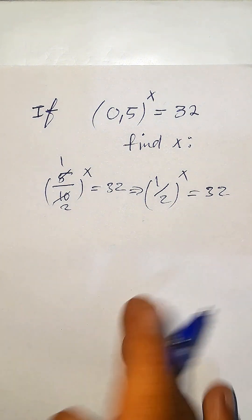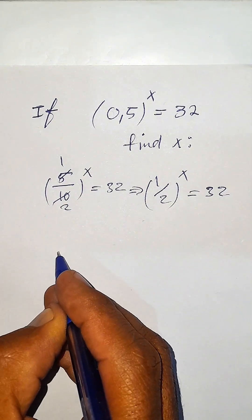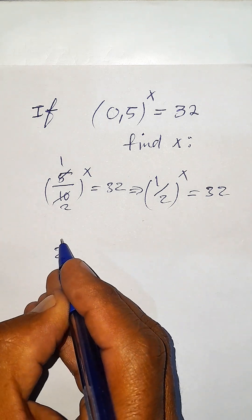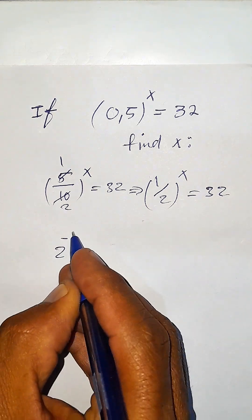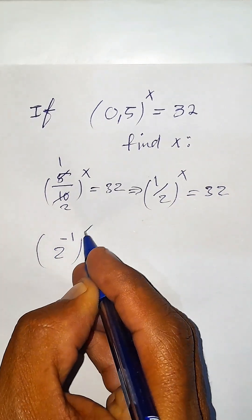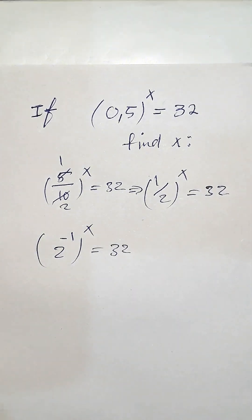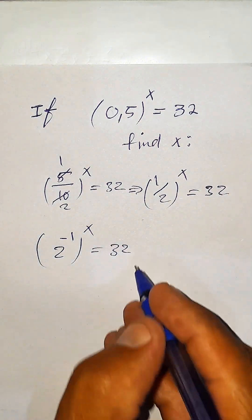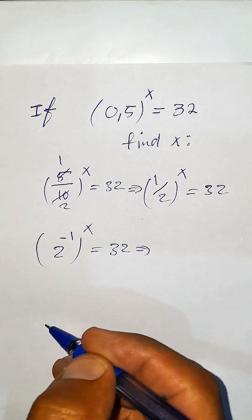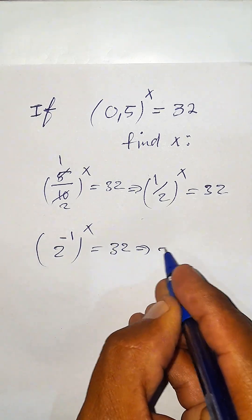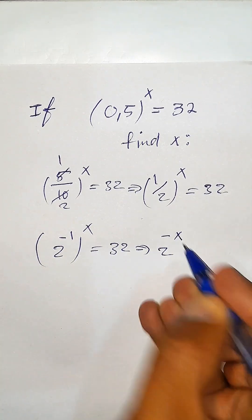Now, instead of 1 over 2, it can be written as 2 to the power of minus 1, whole to the power of x. This becomes 2 to the power of minus x.